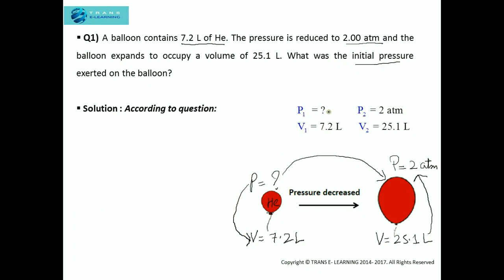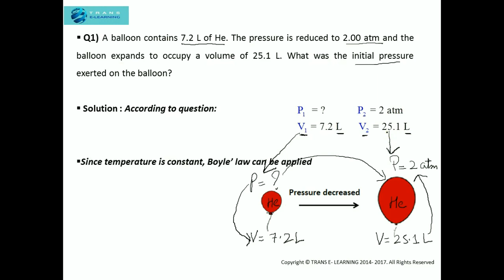The second step: what is given and what needs to be found. P1 is unknown — that's what we need to find. V1 is 7.2 liters. After the pressure is reduced, P2 is 2 atmosphere and V2 is 25.1 liters. The third step is to check the units. Volume 1 and Volume 2 both have units of liters, so they are the same and no conversion is needed.